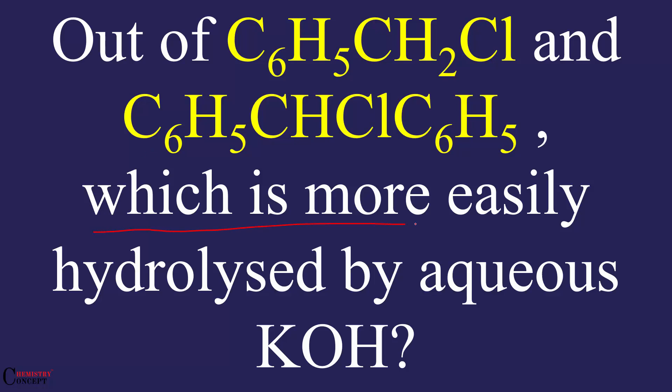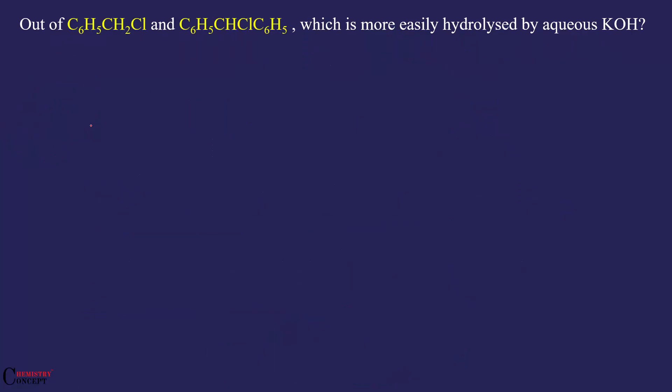Out of the two, which one is more easily hydrolyzed by aqueous KOH? Another question from NCERT textbook. Let's first draw the structures of both compounds. C6H5 represents a benzene ring.